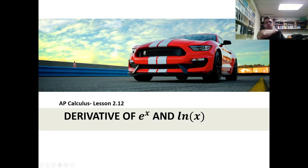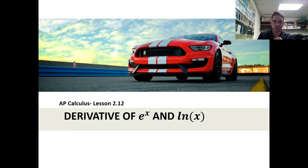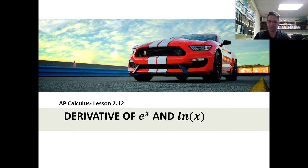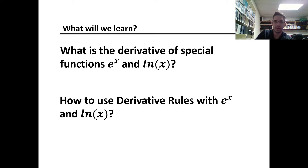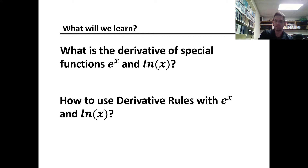This is lesson 2.12. Unit 2 is called derivatives. Lesson 12 is called derivatives of e to the power of x and natural log of x — this is the last lesson for this unit. We've hinted at e to the power of x before, so now we're going to unpack what that means. We'll do a quick refresher of what e is, find the derivative of e to the power of x, and find the derivative of natural log of x using our derivative rules.